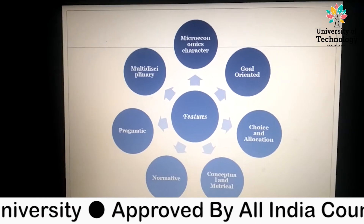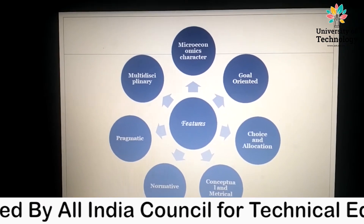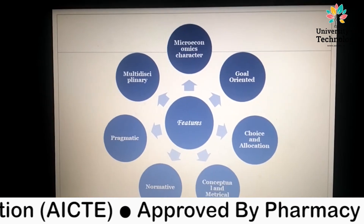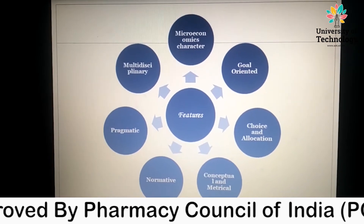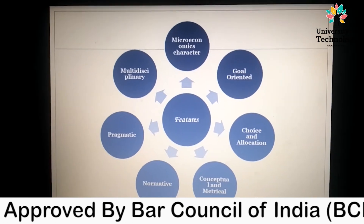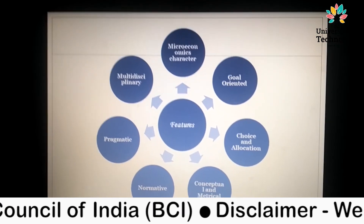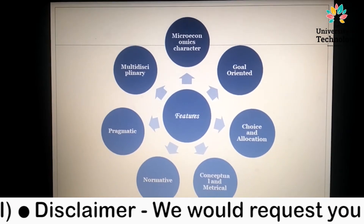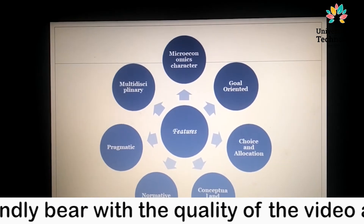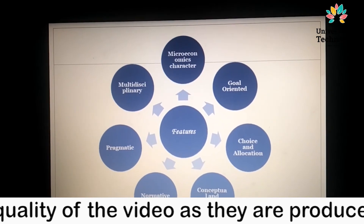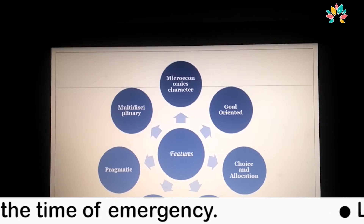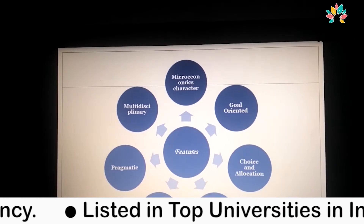Now the features of Business Economics. The first characteristic is its microeconomic character — it deals with individual as well as some macro aspects. It is goal-oriented, meaning economic theory is used to achieve the goals of the organization. Another feature is that it is based on choices — selecting the best alternative to allocate resources optimally where they are available in the organization.